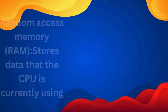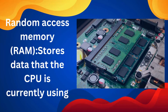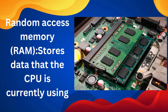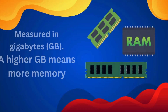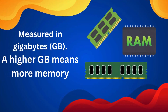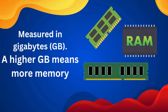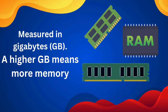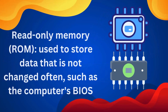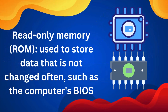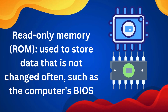Memory. Random access memory, RAM, stores data that the CPU is currently using. It is measured in gigabytes — a higher GB means more memory. The second kind of memory is read-only memory, ROM, used to store data that is not changed often, such as the computer's BIOS.